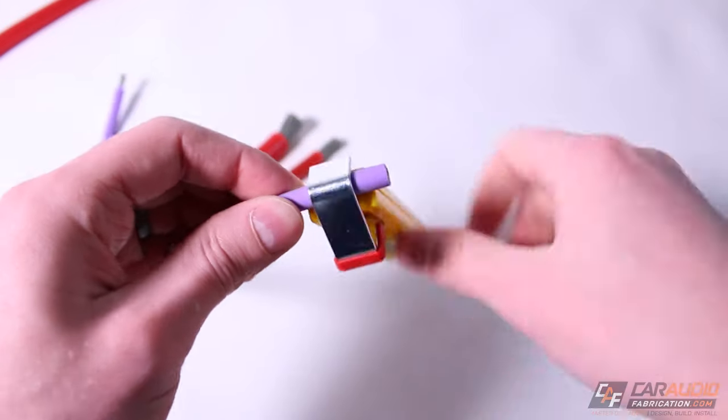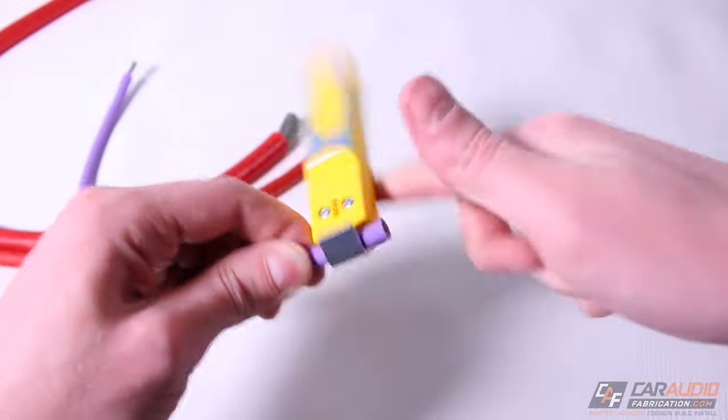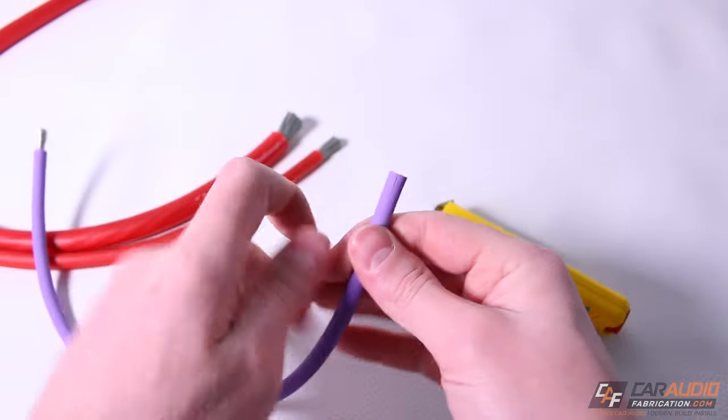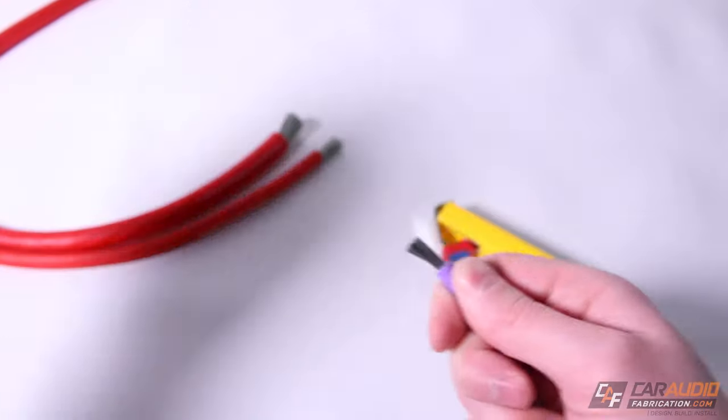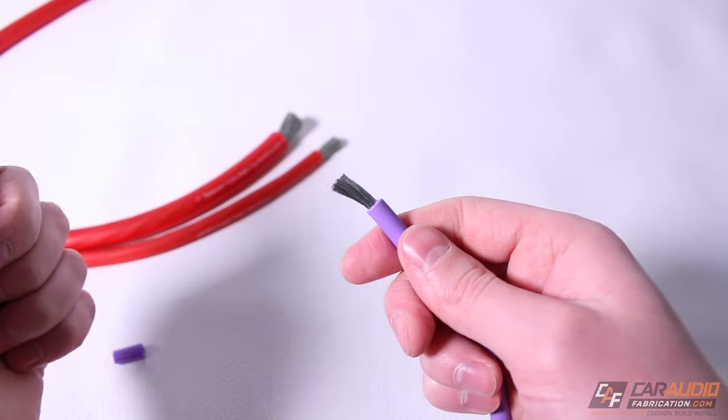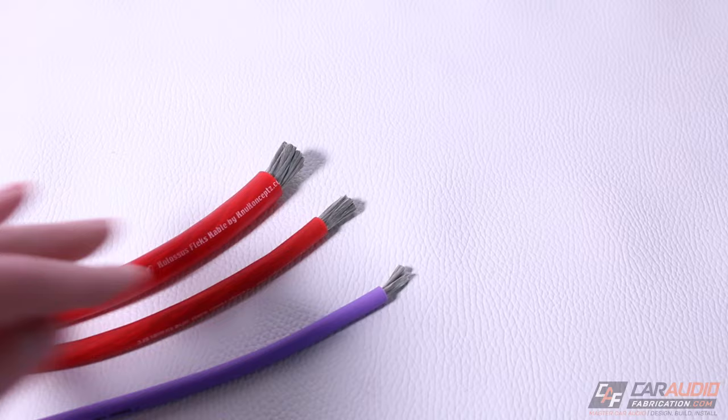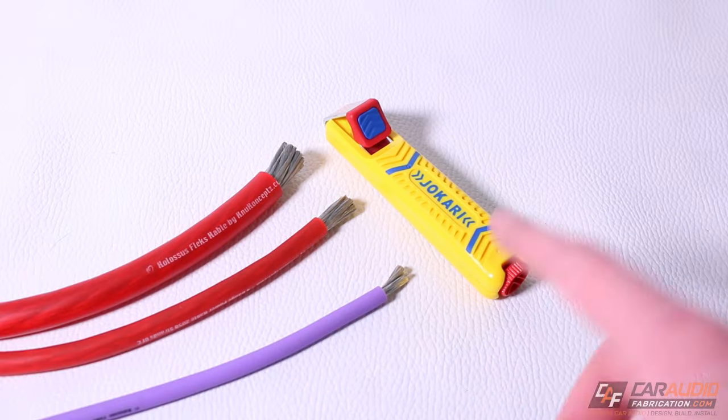Let's do our eight gauge. Give it a spin. Give it a pull. There we go. Three perfectly stripped wires, each done in just a matter of seconds using that tool.